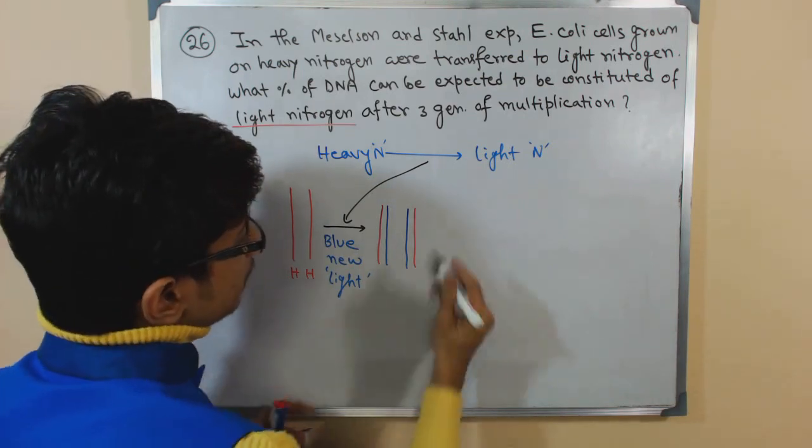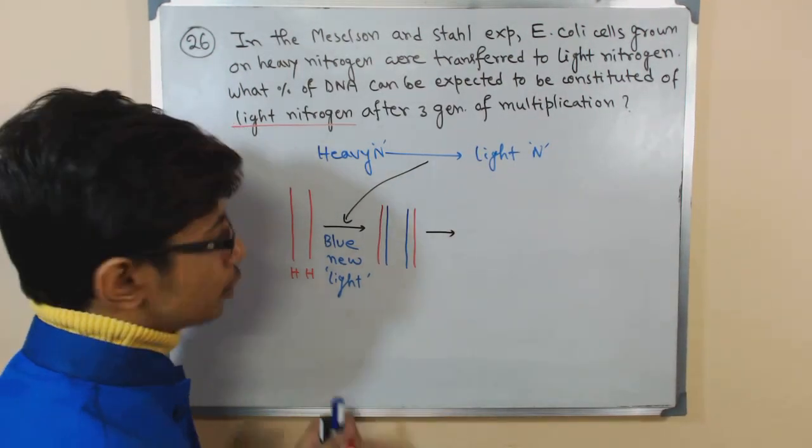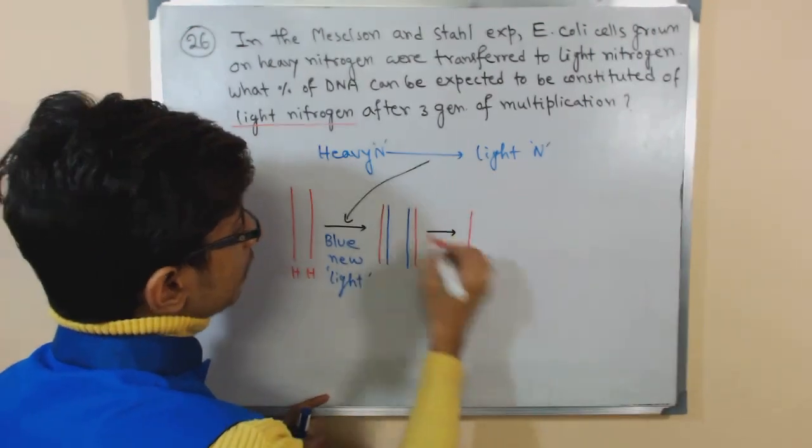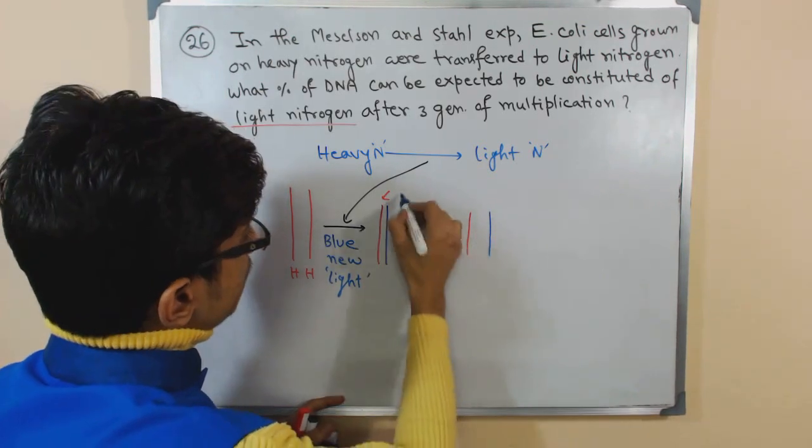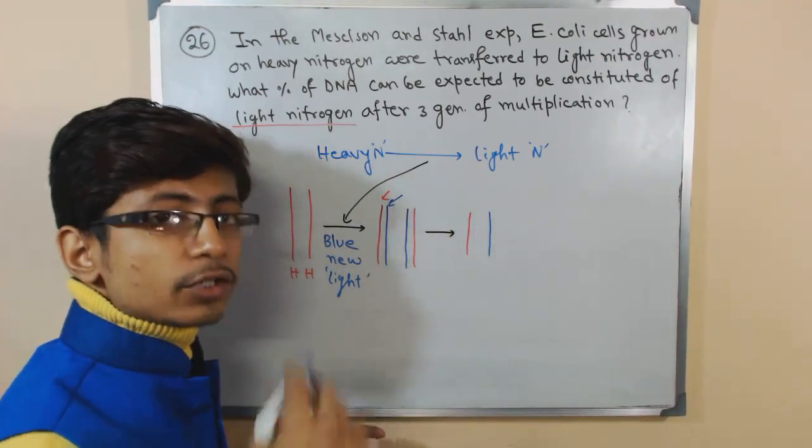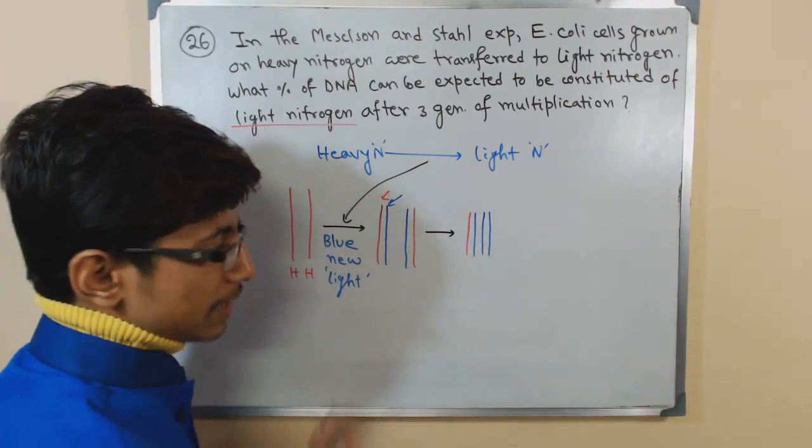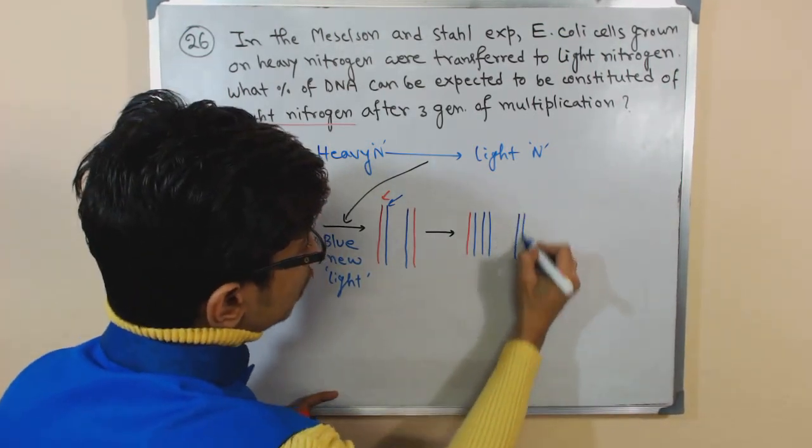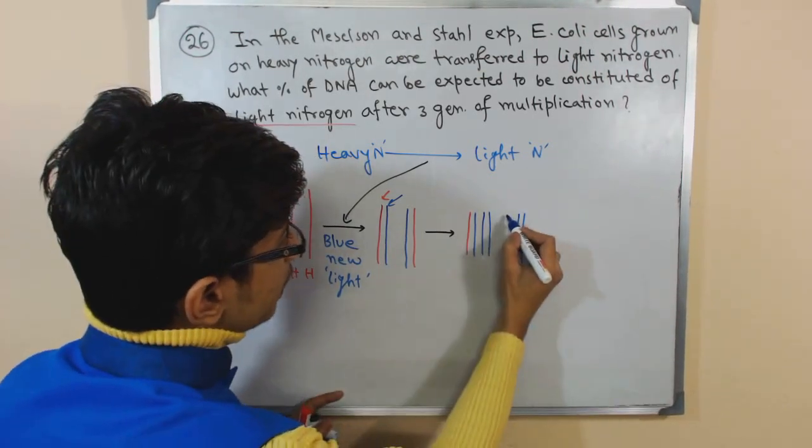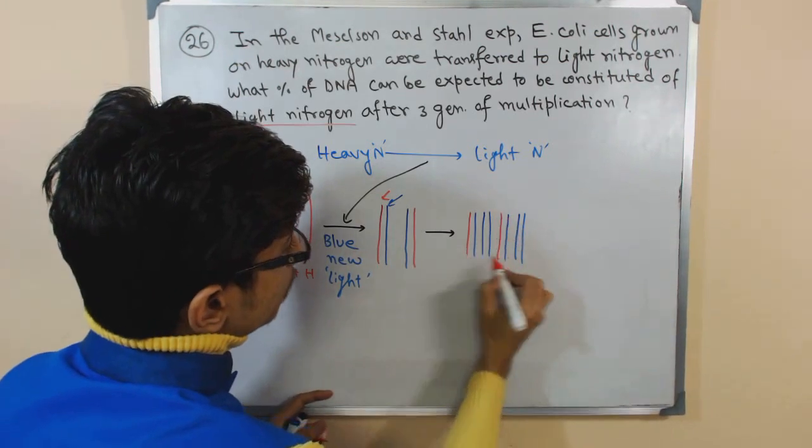So in this case, in the second generation, again this red one and this blue one will be separated and then again two new daughter strands which will be blue because of light nature will be produced. Similarly, the same case occurs with the other strand. So they are produced.